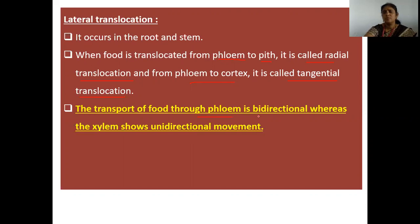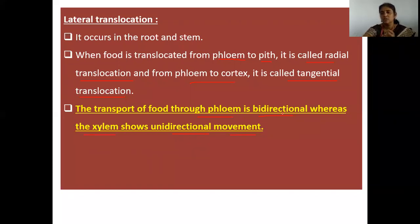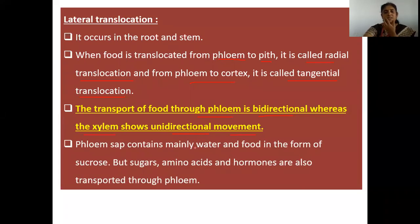The transport of food through phloem is bi-directional, whereas xylem shows unidirectional movement. Phloem sap contains mainly water and food in the form of sucrose, but other sugars, amino acids, and hormones are also transported through phloem.